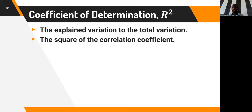We now have another data frame with variables: code, revise, exam, anxiety, and gender. We store it as an object called 'exam'. The code column just represents sample size and can be ignored. Gender is categorical, so we set it aside for now. The three variables we are interested in are revise, exam, and anxiety — we want to look at the relationships between them.